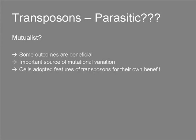Transposons are often called parasitic — but could they not be mutualists? We know that sometimes the insertion of a transposon can have a beneficial result; otherwise, half of our genome would not be transposons. Transposons are also a very important source of mutational variation. They are responsible for many chromosomal rearrangements, such as deletions, duplications, inversions, or translocations, and thereby create mutations and variations in the genome that would not occur in any other way.